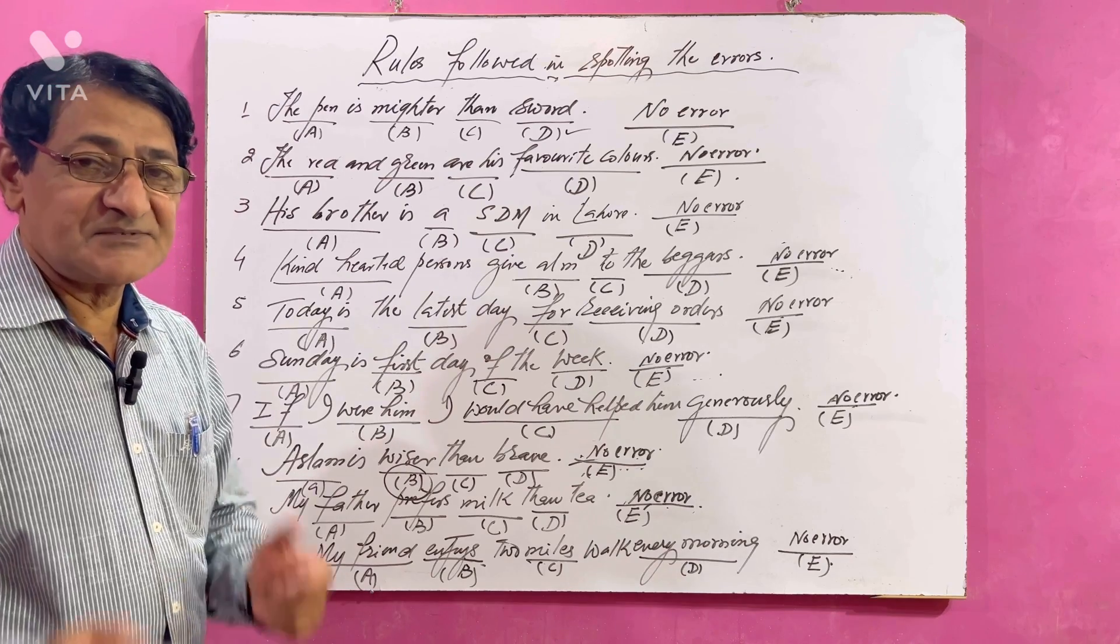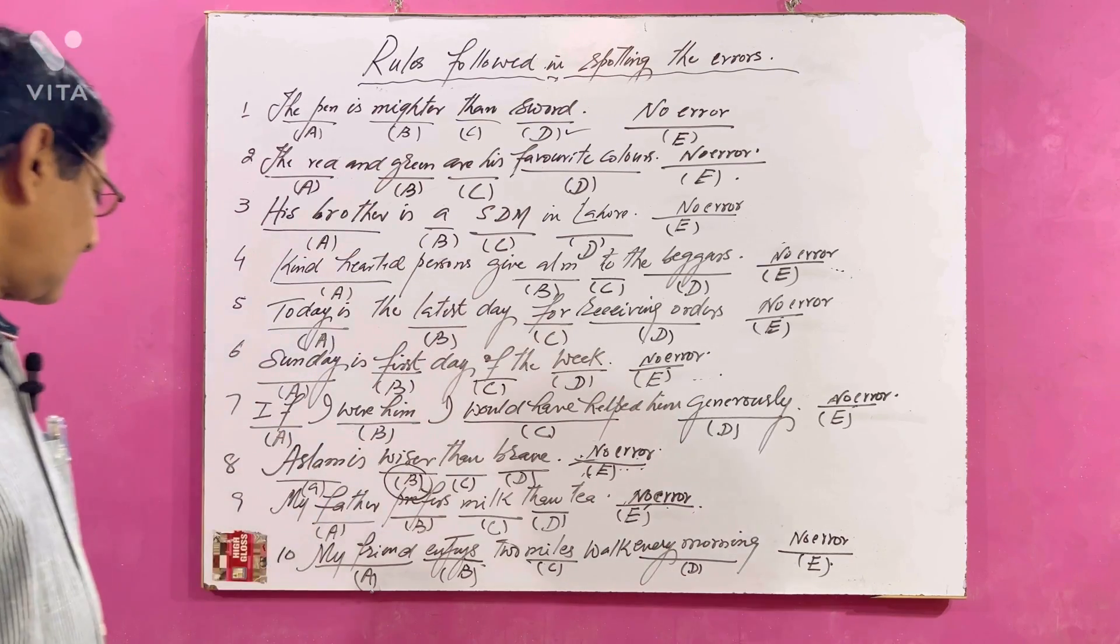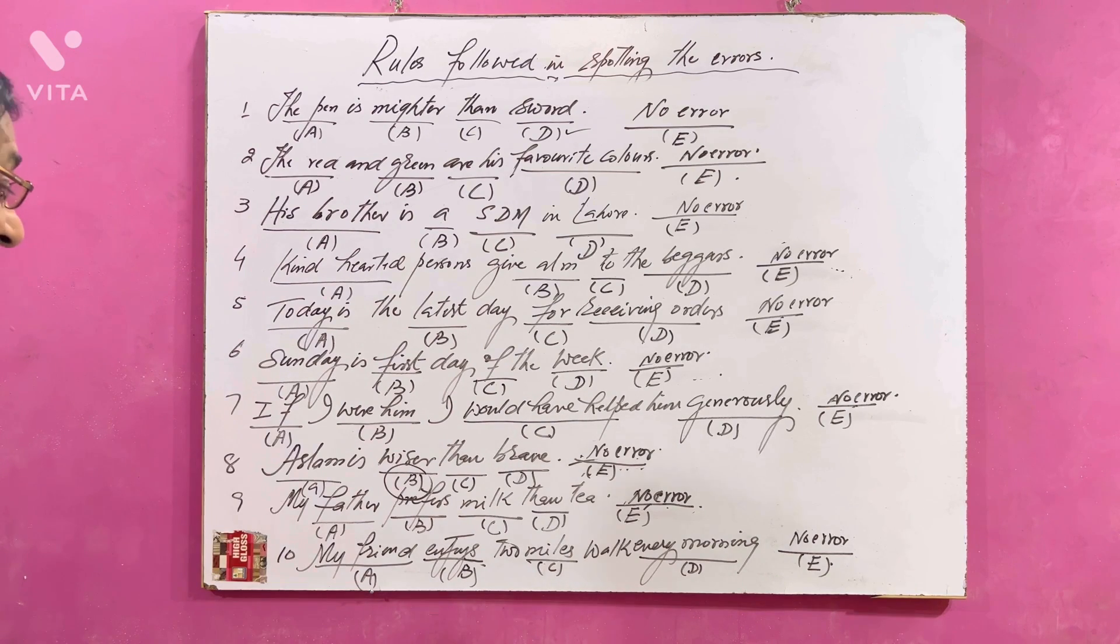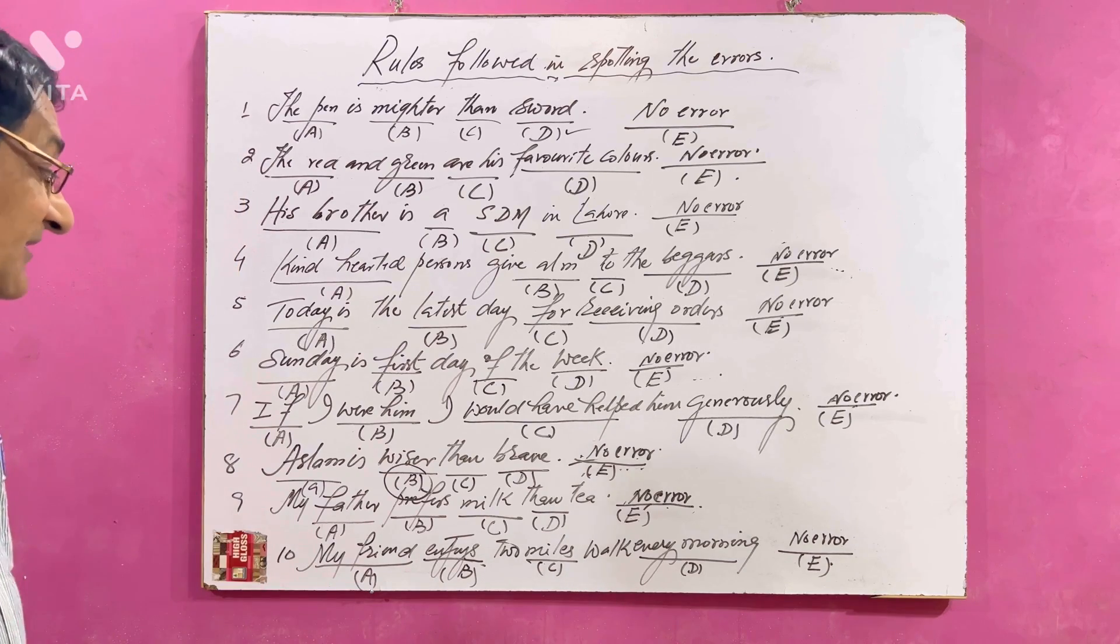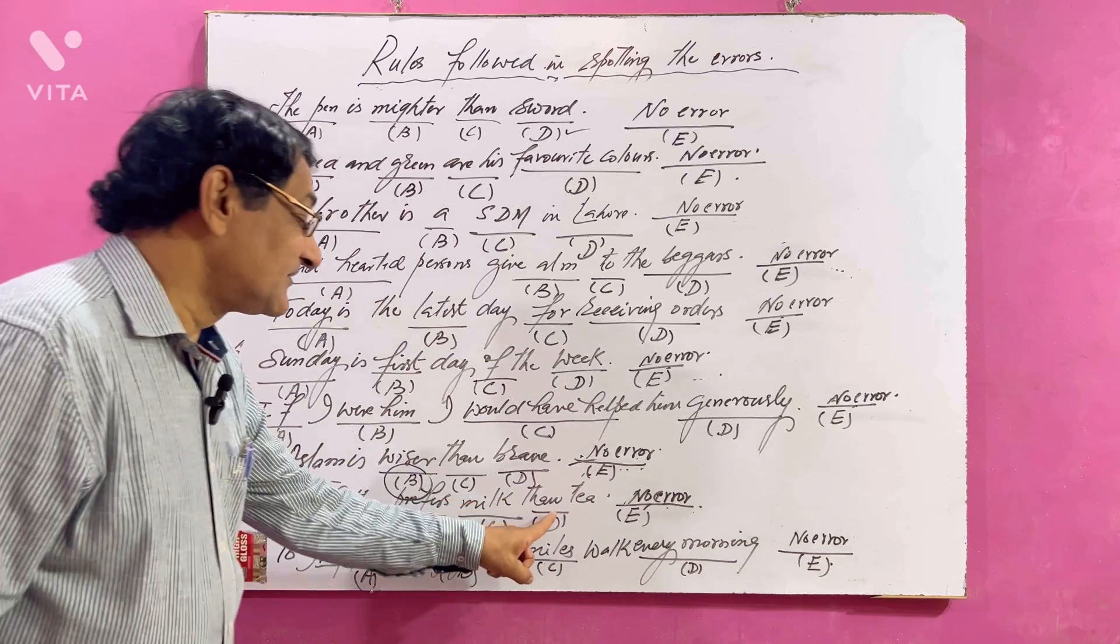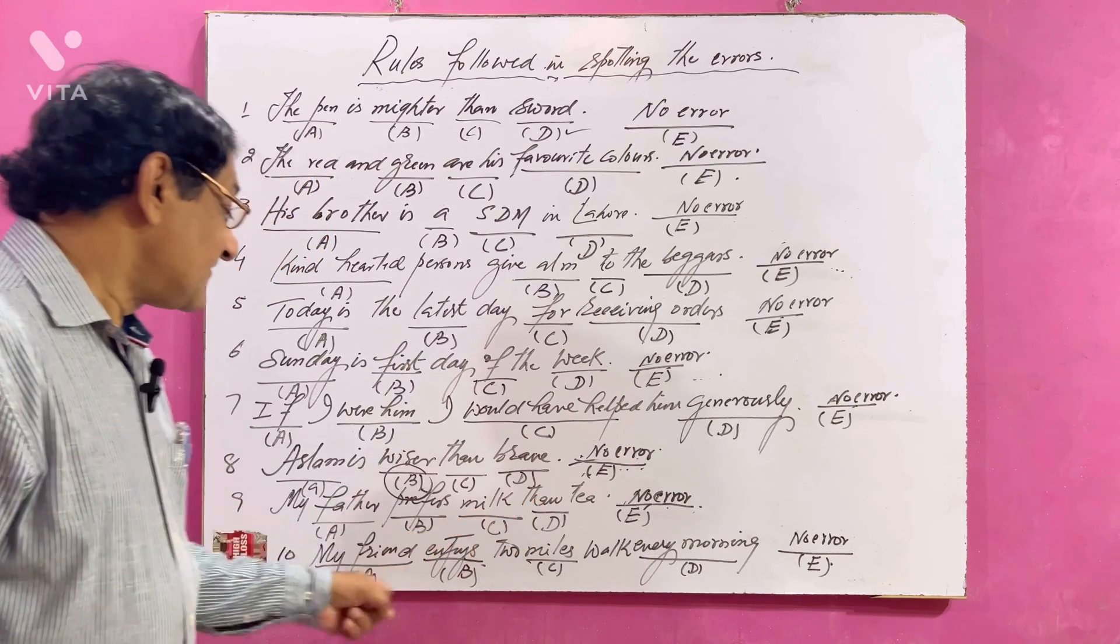Number nine: My father prefers milk than tea. Where is the mistake? This one is incorrect. Instead of 'than' we have to say 'to' - prefers milk to tea.